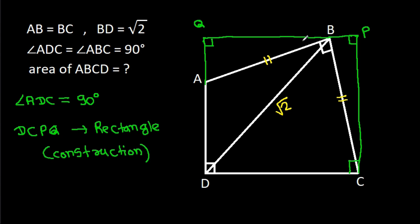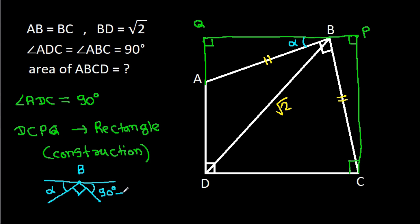Now suppose this angle is alpha. Then at point B, this angle is alpha and this angle is 90 degrees. So this angle will be 90 degrees minus alpha — suppose it is beta. So this angle is beta.